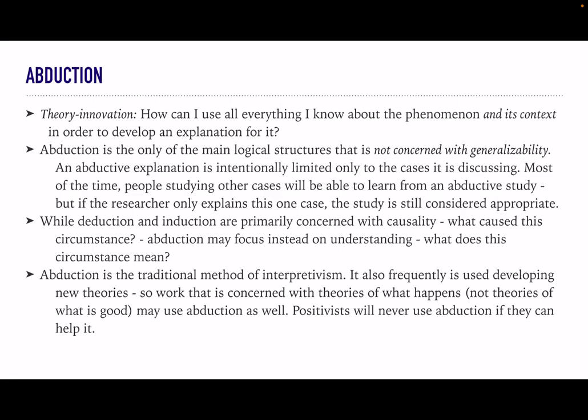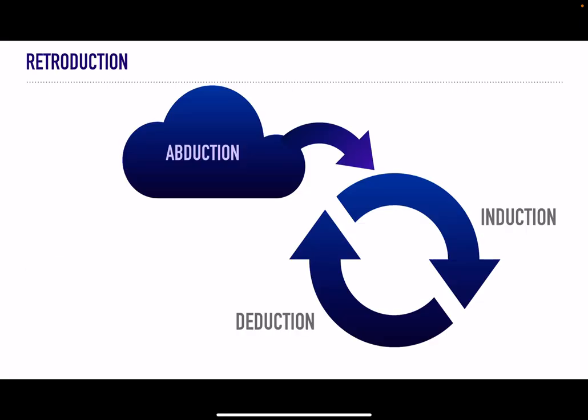That attitude of non-generalizability — really trying to understand one thing in its situation — for a positivist, that's not science. So you have these three logics, and the thing is they're all related to each other. If you look at the induction-deduction circle, that is called retroduction. In deduction, you test a theory and get evidence for or against it.